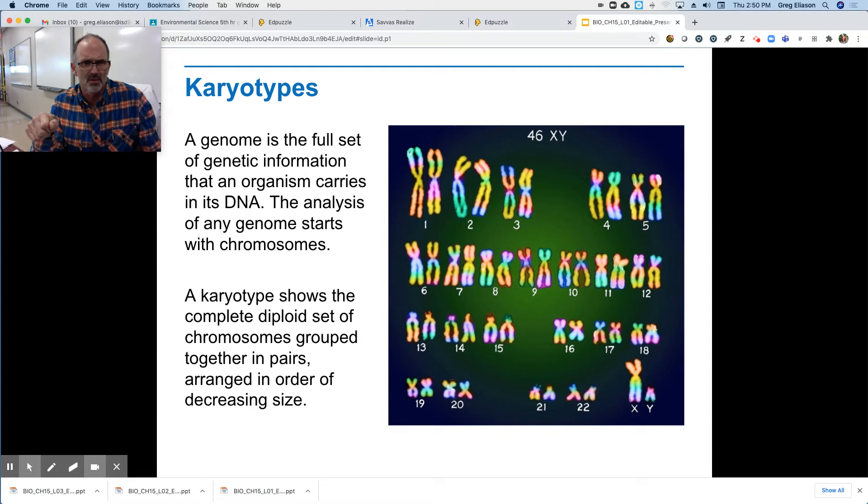The analysis of any genome starts with chromosomes. A karyotype shows the complete diploid set of chromosomes grouped together in pairs arranged in order of decreasing size. And so when they used to stain, they would stain chromosomes